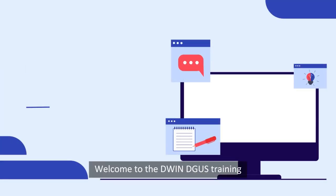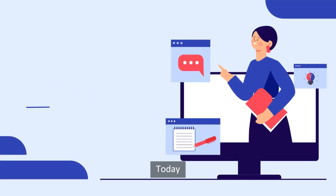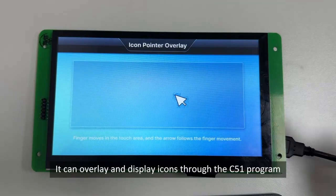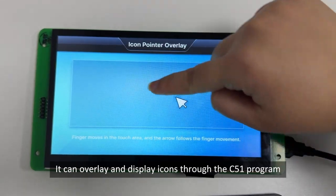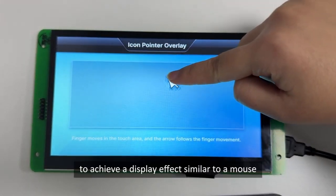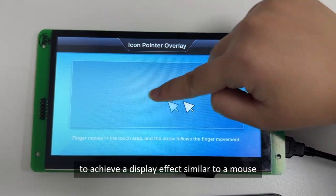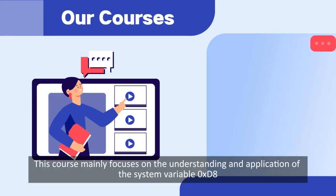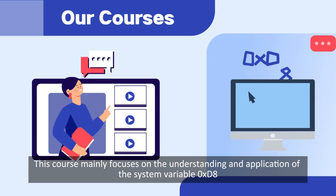Hello everyone, welcome to the DWIN DGUS training. Today we are going to introduce the Pointer Icon Overlay Function. It can overlay and display icons through the C51 program to achieve a display effect similar to a mouse. This course mainly focuses on the understanding and application of the system variable 0xD8.